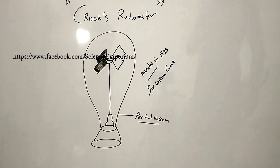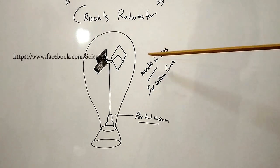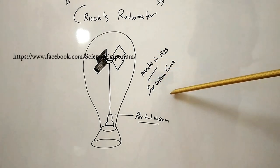First of all, we will look at Crookes Radiometer construction. It was invented in 1870 by Sir William Crookes.